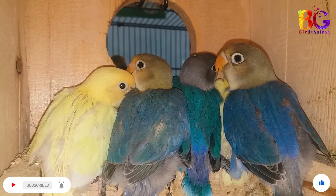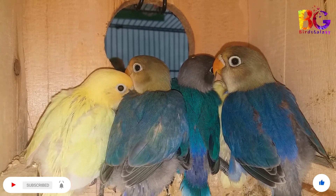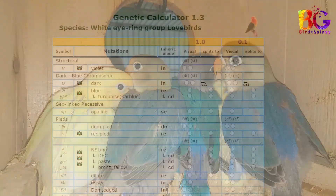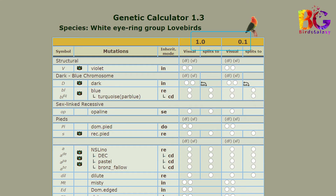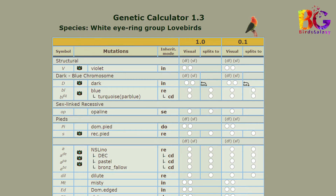Here is some basic calculation and easy to understand. In first genetic view, we call 1.0 is male and 0.1 is female. In the first column you can see symbols of lovebirds. In the second column are mutation names. In the third there is the type of inheritance and some mutations of lovebirds.